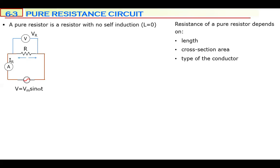If you heat a resistor, its resistance can increase — from 10 to 10.5, or from 100 to 101. Increasing temperature causes resistance to increase; decreasing temperature causes it to decrease. Nothing else can affect the resistance of a resistor. I explain this because in alternating current, potential difference is continuously changing.